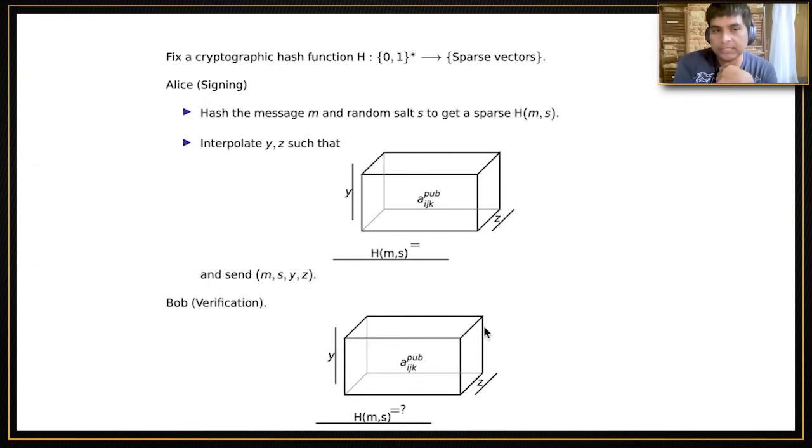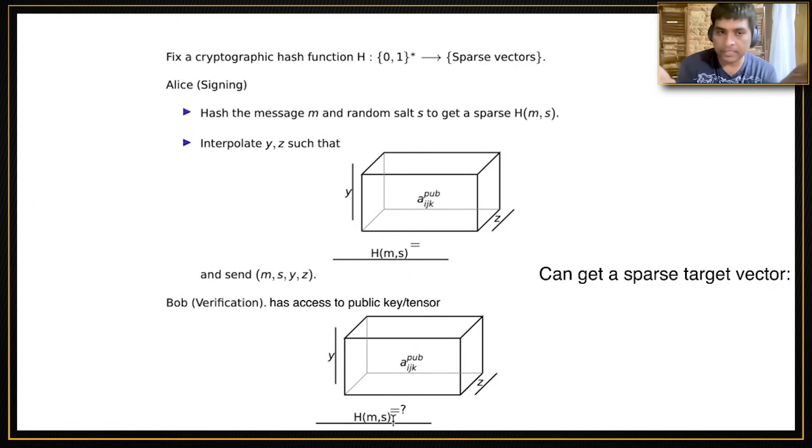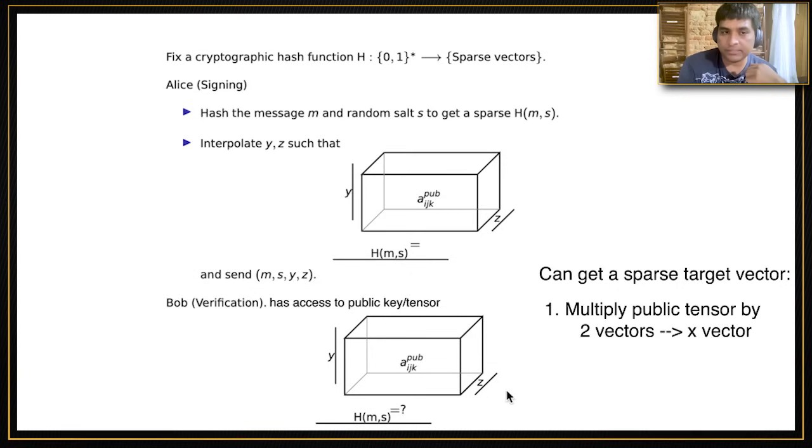Bob or anyone else who desires to verify will have access to this public key, the public tensor. Their verification is very simple. They look at the signature and know the message and salt. The hash function is public, so they can compute the hash of the message and salt and write down a sparse target vector. From the signature, they know the vectors y and z. The tensor A_pub is public by name. Bob can multiply the tensor with these two vectors and get an x vector. All he has to do is verify that the hash of the message and salt agrees with this x vector.